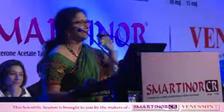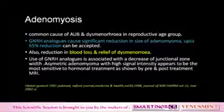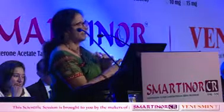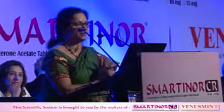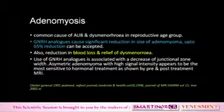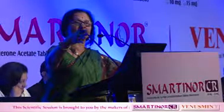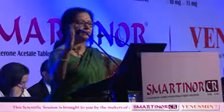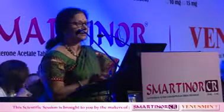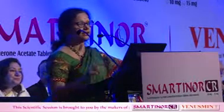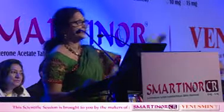Let us see adenomyosis — the commonest cause in AUB and dysmenorrhea. We have excellent GnRH analogs which cause significant reduction in size of adenomyoma up to 65%, with less blood loss and relief of dysmenorrhea. In adenomyosis, if it is very large, add Mirena along with the GnRH analog — give the GnRH analog to reduce the size, then insert the Mirena. It's an excellent double treatment, and the bleeding is definitely less as evaluated by menstrual calendar. Dysmenorrhea is also reduced as per VAS scores.